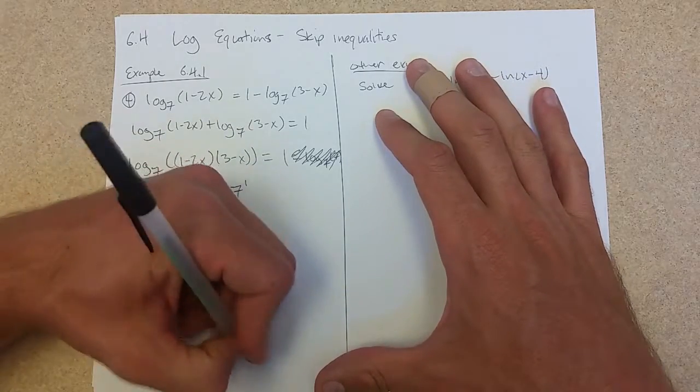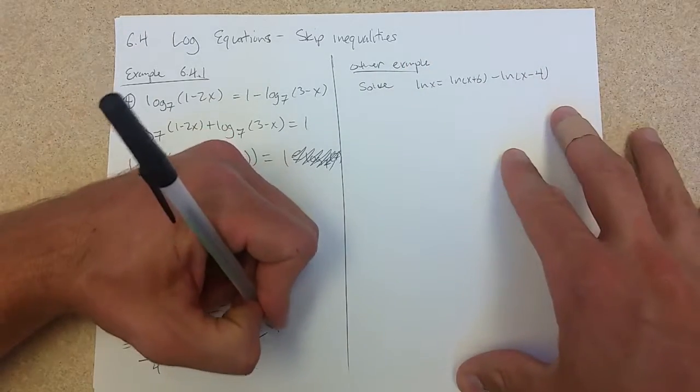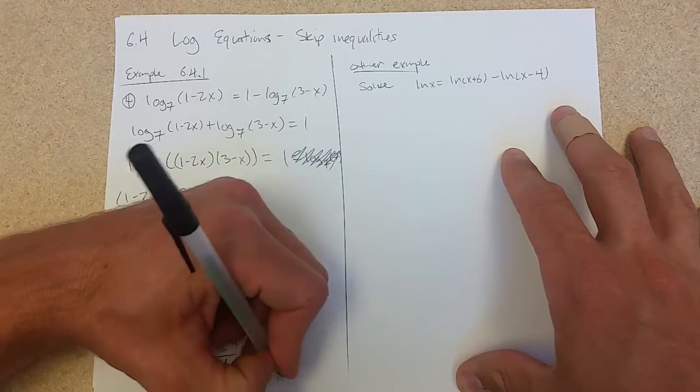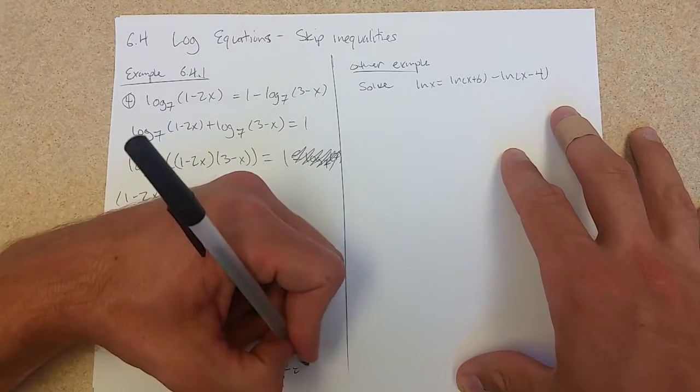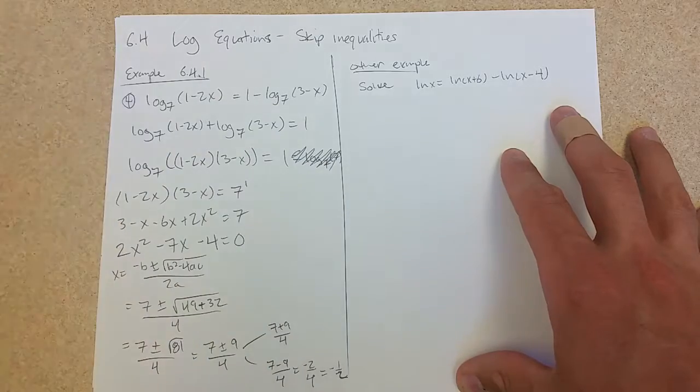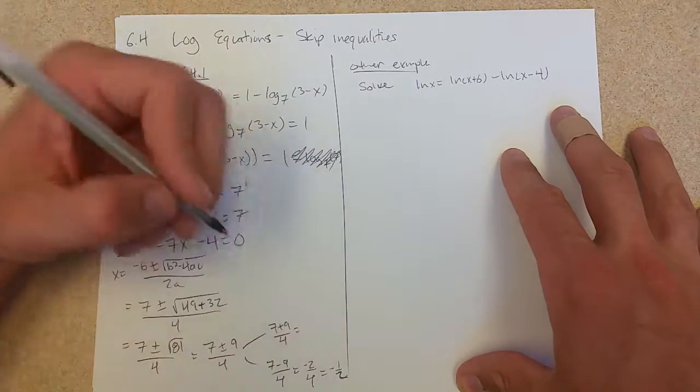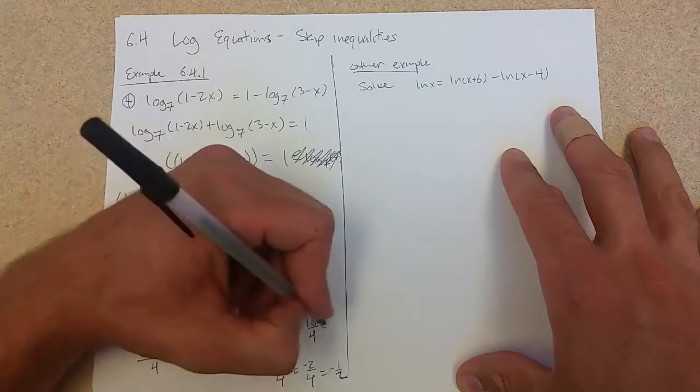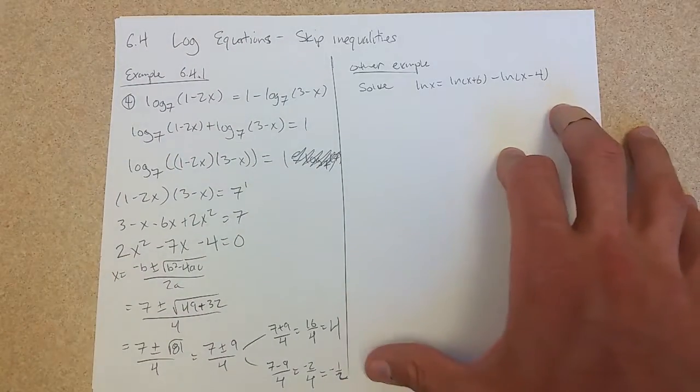So there's two choices. 7 plus 9 or 7 minus 9. 7 minus 9 is negative 2 over 4, negative 1 half. 7 plus 9, 16 fourths is 4. 4 and negative 1 half.